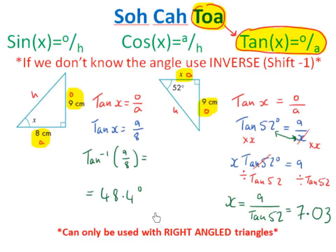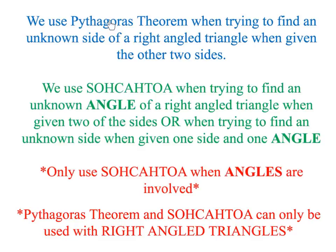Remember, we can only use SOHCAHTOA with right-angled triangles, just like Pythagoras' theorem. We use Pythagoras' theorem when finding an unknown side of a right-angled triangle when given the other two sides — it can only be used when dealing with sides alone. We use SOHCAHTOA when finding an unknown angle given two sides, or when finding an unknown side given one side and one angle. Basically, only use SOHCAHTOA when angles are involved. There are other formulas for non-right-angled triangles — the sine rule and the cosine rule — which we'll cover in other videos.